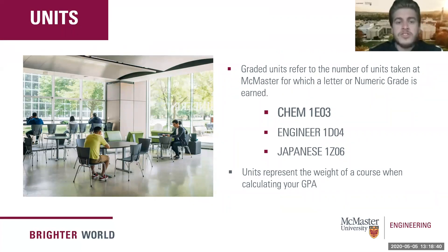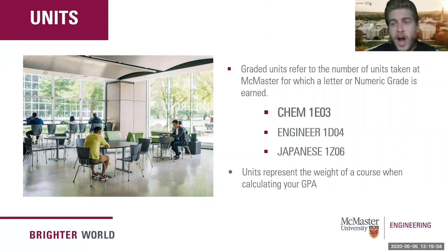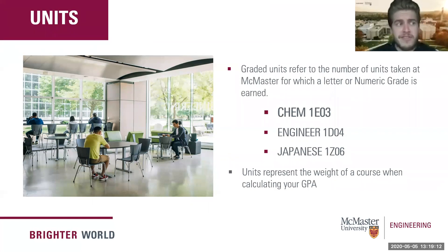Each course has an associated number of units, and this is used to weight your GPA when calculating it. For example, we're going to use three courses: Chem 1E03, Engineer 1D04, and Japanese 1Z06. The last number of these course codes indicates the number of units per course. You wouldn't want to simply divide by the number of courses, because courses with bigger unit weights count more toward your GPA.